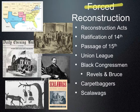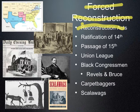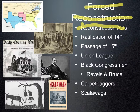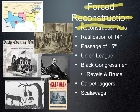This is slide four on Forced Reconstruction. We'll start with an act passed by Congress in March of 1867, known as the Reconstruction Acts. The Reconstruction Acts divided the South into five military districts. On the map in the top left corner, you can see the five districts: Virginia had a district by itself, North and South Carolina were in a district, Alabama, Georgia and Florida were in one, Arkansas and Mississippi in one, and then Texas and Louisiana.